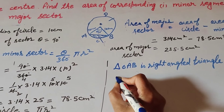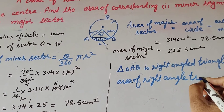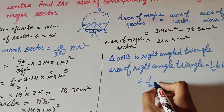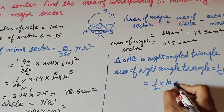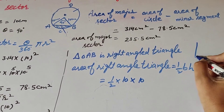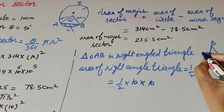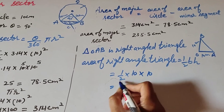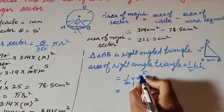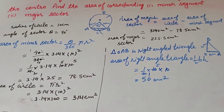We know the area of a right angle triangle equals one half multiplied by base multiplied by height. This equals one half multiplied by 10cm multiplied by 10cm, because at point O the angle is 90 degrees so both sides OA and OB are 10cm. Simplifying: 10 and 2 cancel to give 5 multiplied by 10, which equals 50 cm squared. So area of right angle triangle OAB equals 50 cm squared.